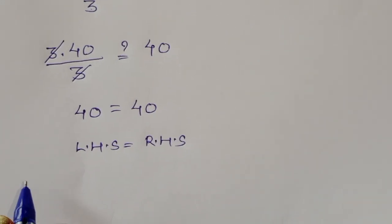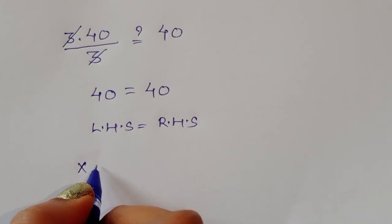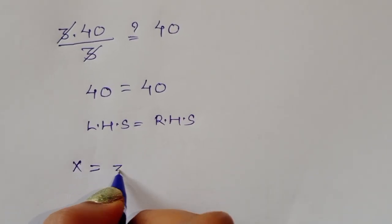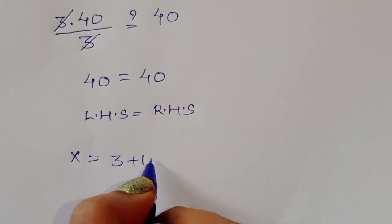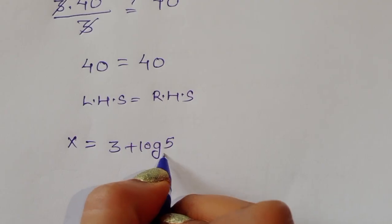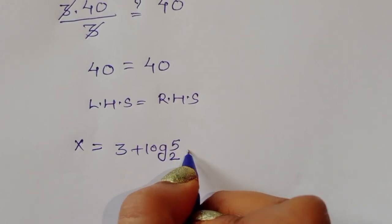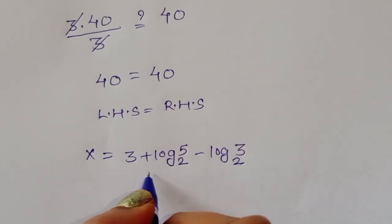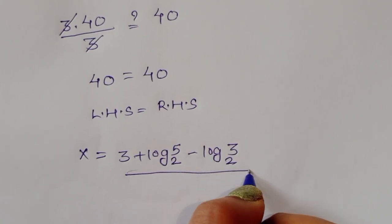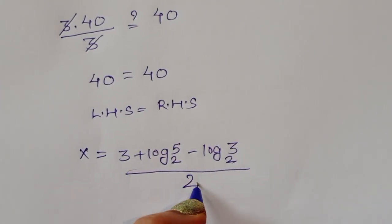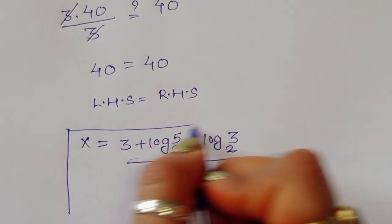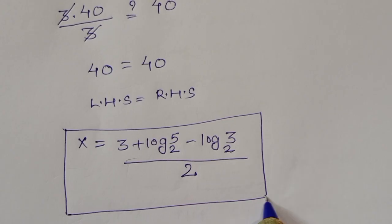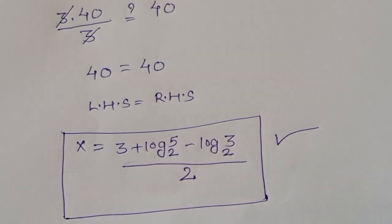Therefore, the value of x is equal to [3 + log₂(5) − log₂(3)] / 2. This is the correct solution for this equation.